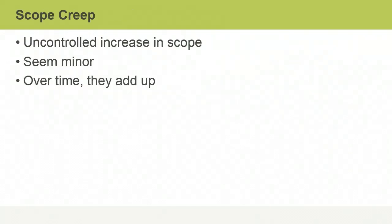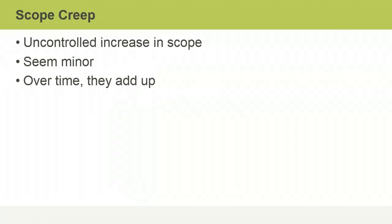Scope creep is what happens when the scope of a project changes, usually an increase, without the change being managed. Often these changes seem minor — just a tweak here or there to improve things — but over time, unmanaged changes add up and can have a major impact on project costs, schedules, and quality.